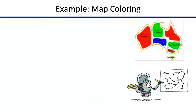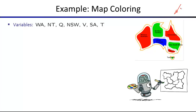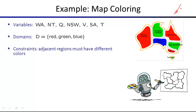Here's map coloring formally. The variables are each territory — our running example is a map of Australia. The domains are the colors red, green, and blue for each territory. It doesn't have to be the case that every variable has the same domain, but in this problem they all do. The constraints are that adjacent territories cannot have the same color.